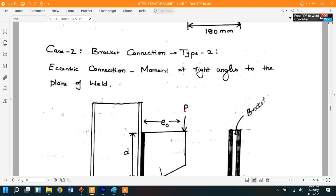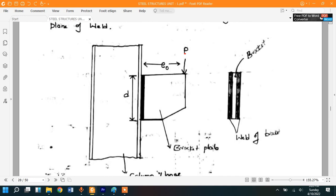What is the difference between the Type 1 and Type 2 bracket connection? It's simple. See here, this bracket plate is being connected to this column which is an I-section, and we are connecting this bracket plate with the help of this weld. The weld is in a plane and the load is acting in a plane. If these two planes are the same, meaning if both weld and load are in the same plane, then it is Type 1 bracket connection. If they are in two different planes, then we call that connection as Type 2 bracket connection. They are not in the same plane.